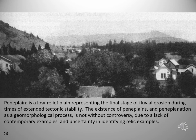The peneplain is a low-relief plain representing the final stage of fluvial erosion during times of extended tectonic stability. The existence of peneplains and peneplanation as a geomorphological process is not without controversy due to lack of contemporary examples and uncertainty in identifying relic examples. However, an erosional surface was noted by Joseph Diller in his mapping of over 1,000 square miles of Tertiary sediment and structure. He proposed that during the late Miocene there was a level peneplain from northwest California to southwestern Oregon, basing his concept on even topography of the summits and ridges as evidence of a uniformly highly dissected platform. Diller's work was affirmed by Porter Irwin in 1997.